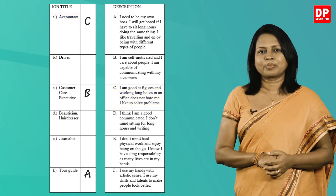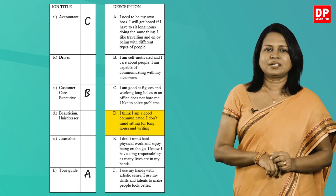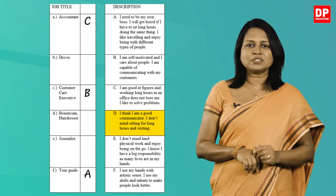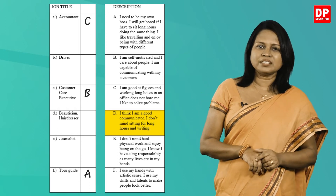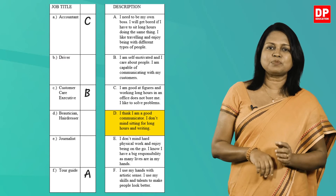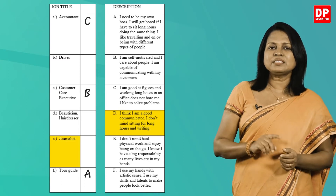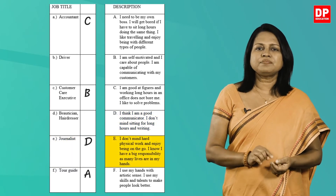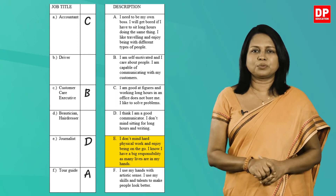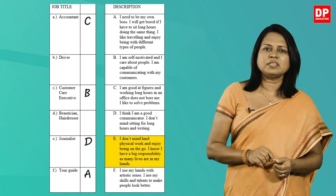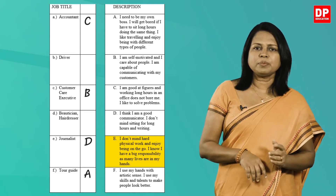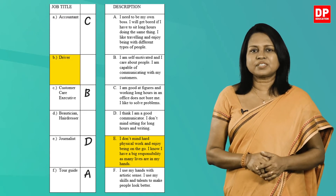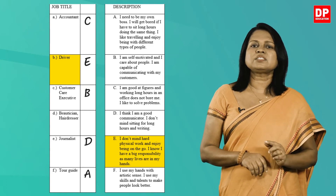Next: I think I'm a good communicator. I don't mind sitting for long hours and writing. Pay attention to the phrase 'good communicator' and the word 'writing' — you can easily understand that it is said by a journalist. Write D for the journalist. Next: I don't mind hard physical work and enjoy being on the go. I know I have a big responsibility as many lives are in my hands. Who holds the big responsibility of many lives? Yes, it's the driver. Write E against the job title driver.